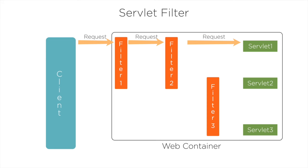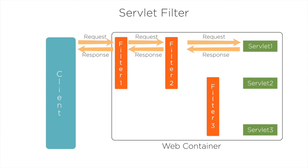Once processing is done in the filters, the request is submitted to the servlet for processing. After the servlet has processed, the response is given to Filter 2, then passed to Filter 1, and finally from Filter 1 the response is given to the client. Whenever the client sends a request for Servlet 2, the request is passed to Filter 1, Filter 2, and then Filter 3.